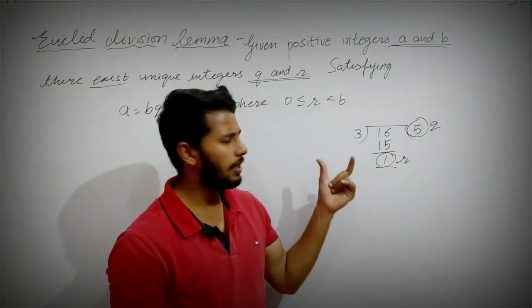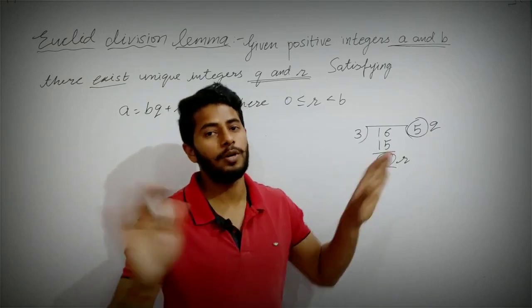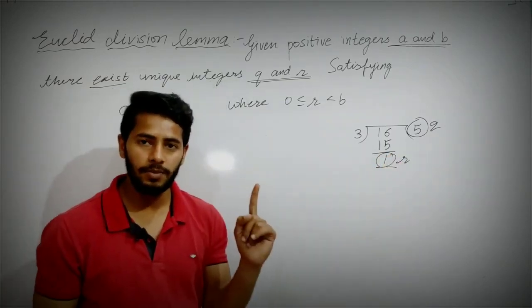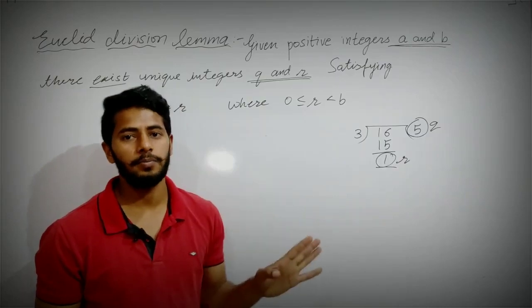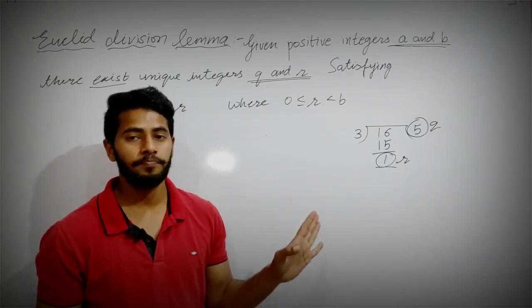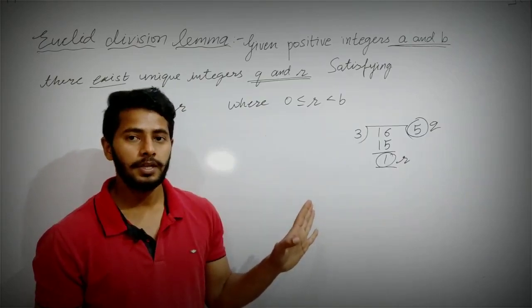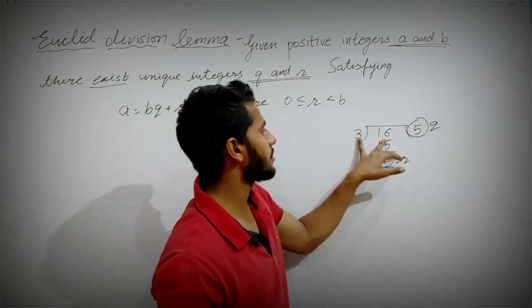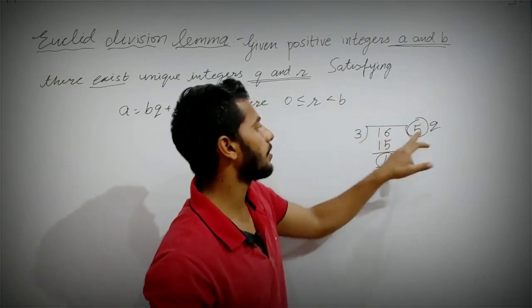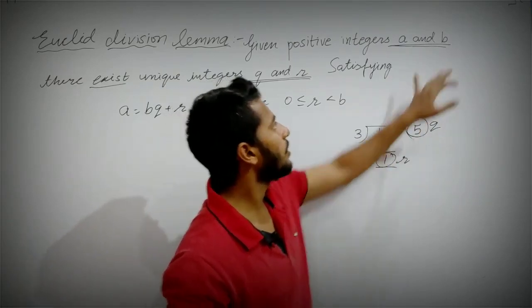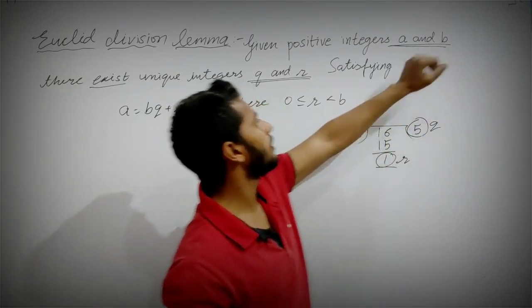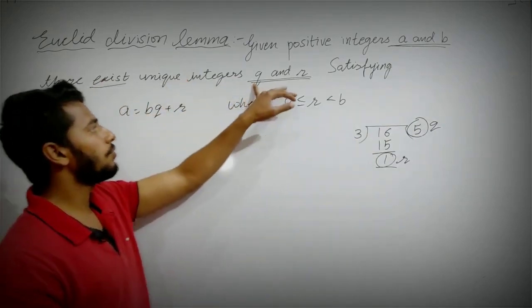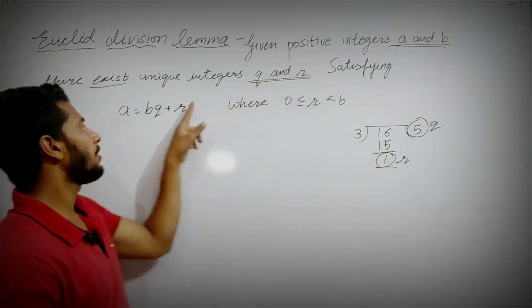And will this happen with every pair of numbers? Take any two numbers, divide them — you will get one quotient and one remainder. So that is exactly what this lemma is saying. Here we have taken A=16 and B=3; quotient Q=5 came, remainder R=1 came.